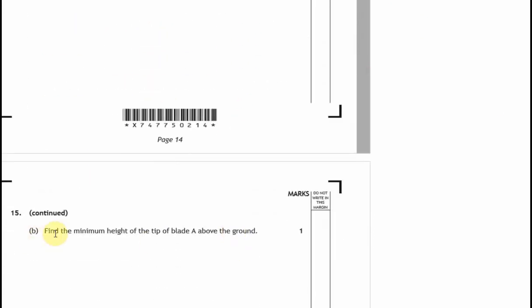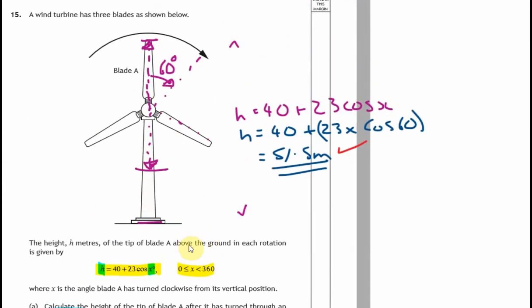Question two: Find the minimum height of the blade above the ground. I guess one mark. Now I think this is quite harsh for one mark, because it requires a tiny bit of thinking. If you think about it, we said that the maximum was up here and the minimum is down here. So my equation 40 plus 23 cos x, I want to minimize this part of the equation. When that's maximum, I'm going to be up at the top. When it's minimum, I'll be down at the bottom.